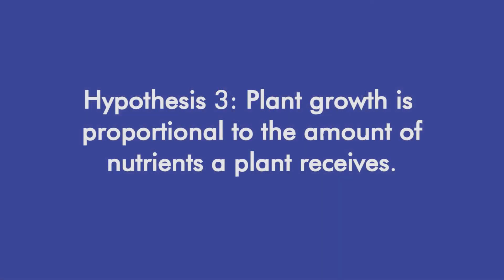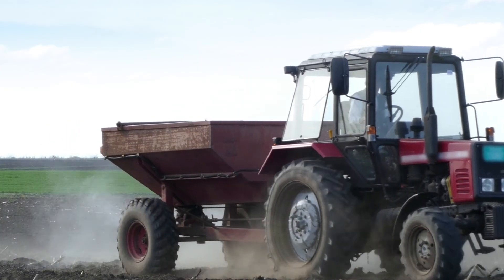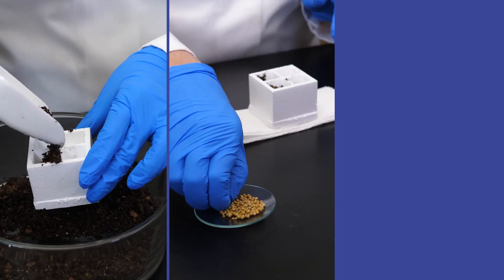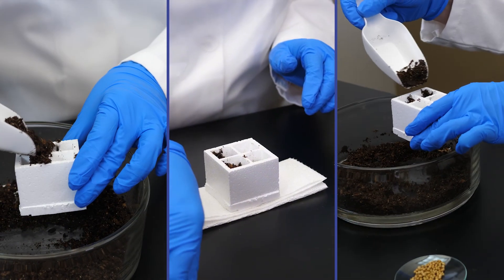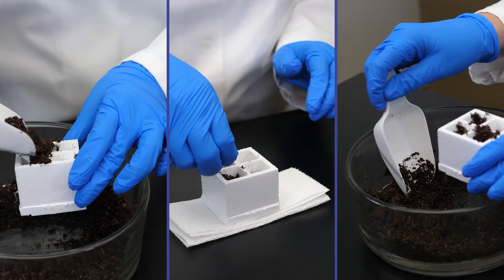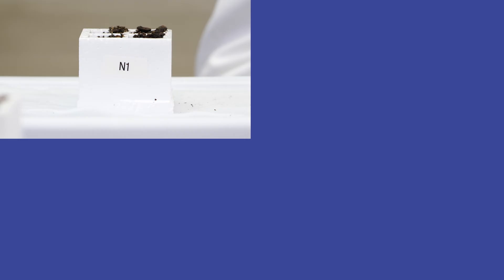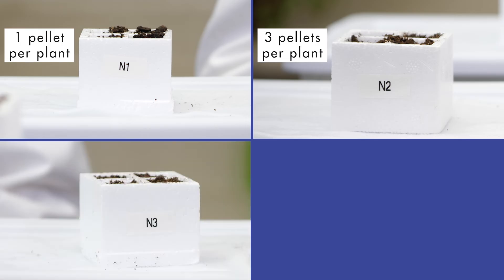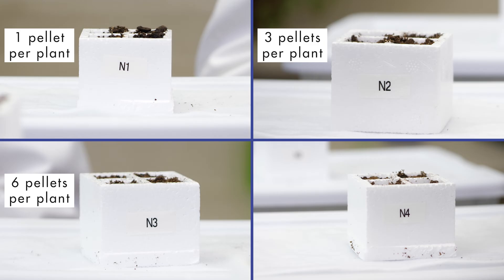In the third experiment, we will test this hypothesis: plant growth is proportional to the amount of nutrients a plant receives. Nutrients added to the water or soil around a plant are called fertilizers. Fertilizers often contain compounds of nitrogen, phosphorus, potassium, and other elements. The fertilizer used for this experiment is in the form of pellets. We will use four groups of plants, each receiving the same amount of light and water, but the amount of fertilizer is the variable. Group N1 will receive one pellet per plant. Group N2 will receive three pellets per plant. Group N3 will receive six pellets per plant. Group N4 will receive no fertilizer pellets.